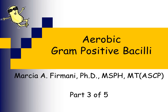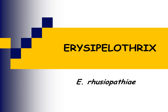We're now starting Part 3 of our aerobic gram-positive bacilli lecture. We're going to continue discussing the genera included in the gram-positive bacilli that are associated with causing disease in humans. In our last Part 2 lecture, we talked about Listeria, and right now we are going to talk about Erysipelothrix. The genus Erysipelothrix has one species commonly associated with causing human infection, and that is the species ruseopathiae.